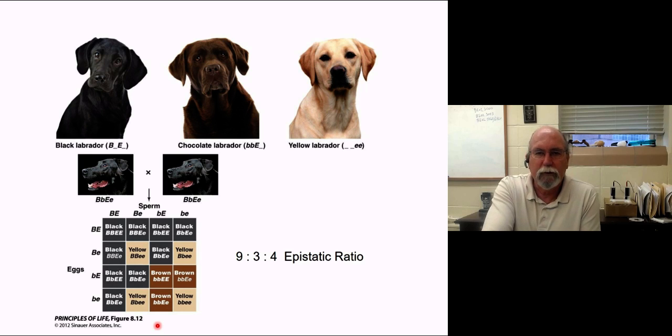You can see that if you take a black lab that's a dihybrid het for both of these and cross it with another black lab that's a dihybrid het, you would end up with exactly what you expect. If they have enough progeny over time, you'd see about nine blacks for every three browns for every four yellows - single recessive epistasis. So you can now look around as people walk with their dogs and understand the simple genetics underneath that.